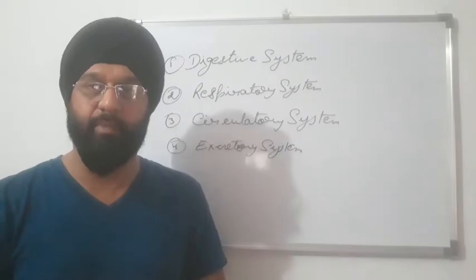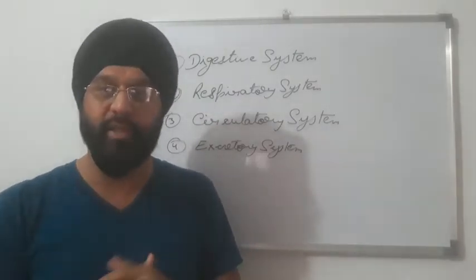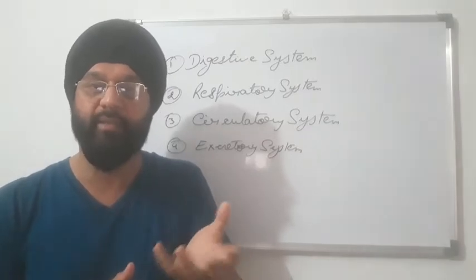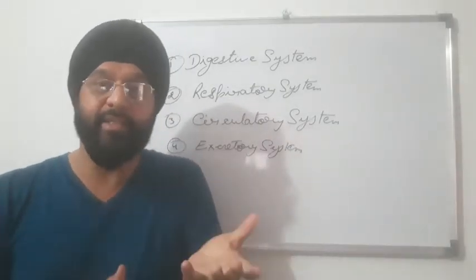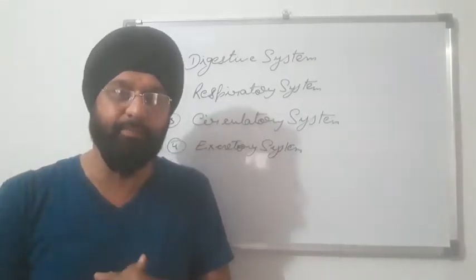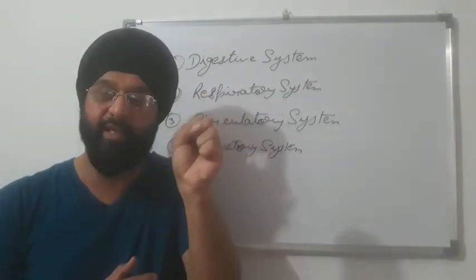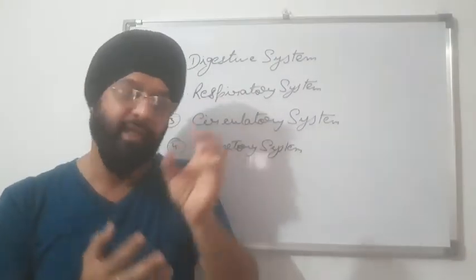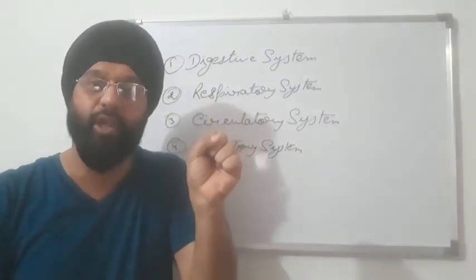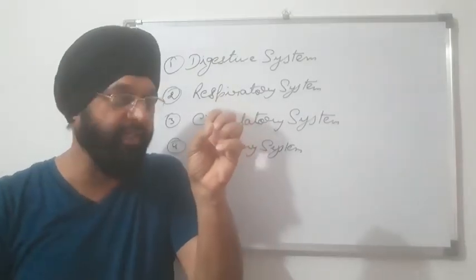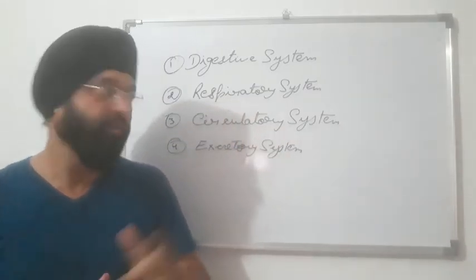So if we don't have the digestive system working, then that means food will not be absorbed into the body. If food is not absorbed, we will not get energy. Now why do we need energy? Because heart muscles need to contract and relax. They need energy. Even when you sleep, your heart is beating without your knowledge. Now if the heart doesn't get energy, then what will happen? It won't contract. When it doesn't contract, it will stop. When it stops, the person will die. So this system is very important.